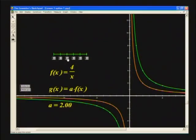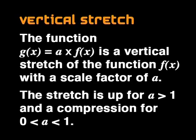How did people ever see this so clearly and easily without computer programs? Let us try to summarize what we saw in that demonstration. The function g of x equals A times f of x is a vertical stretch of the function f of x with a scale factor of A. This is a stretch for A greater than 1 and a compression for 0 smaller than A smaller than 1. That leaves us with a horizontal stretch and I suggest that we go straight back to the graphing program.